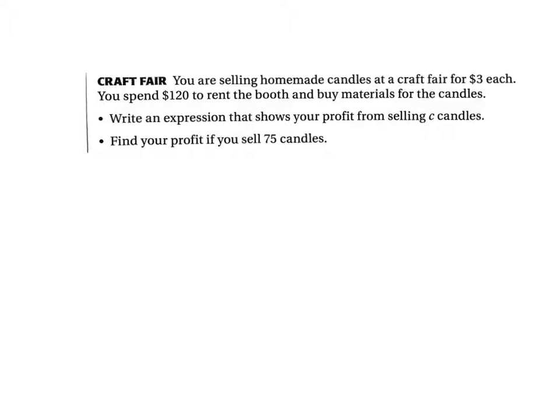One more problem here. You're selling homemade candles at a craft fair for $3 each. You spend $120 to rent the booth and buy materials for the candles. First part, write an expression. Remember the algebraic expression with the variable. This shows your profit for selling C candles. There's that variable. So we're selling the candles for $3 each. That means our expression is going to be 3C, which means 3 times C. But it also says show your profit. But we had to spend $120 just to rent the booth. So that's going to cost us minus $120 from whatever we sell to get our profit. So the expression is 3C minus $120.